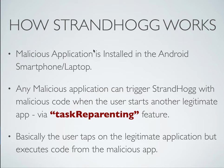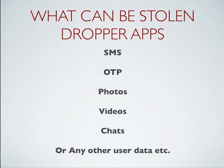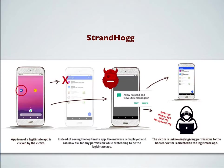What can be stolen from your phone? SMS OTPs from banking or any verification, photographs, videos, chats, and any other user data present on your phone. And to reassure — a phone does not need to be rooted in order for this bug to exploit it.